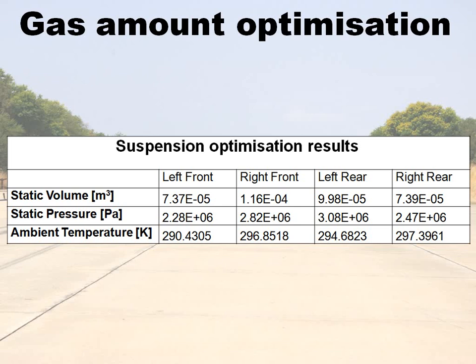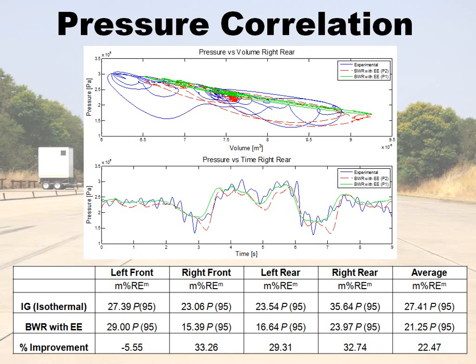The results showed quite a discrepancy between the assumed 0.1 liter volume and the actual volumes — for instance, the left front measured 0.073 liters, considerably less than expected. Using these corrected gas amounts in the full vehicle simulations, the BWR model with the energy equation now showed approximately a 22.5% improvement in mean relative error, which is much more consistent with what was expected from the laboratory results.